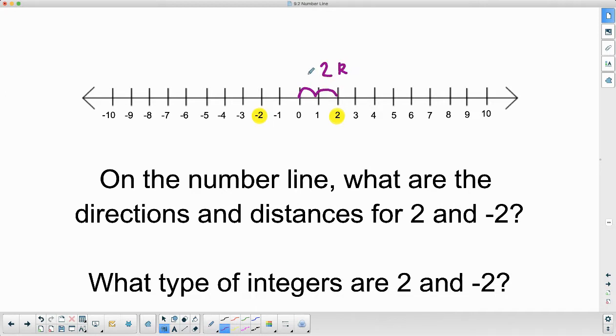I'm just going to put an R as I'm writing with my mouse. And if I'm going negative two, then I have to go two to the left. And two and negative two are opposites, because they're both two units away from zero.